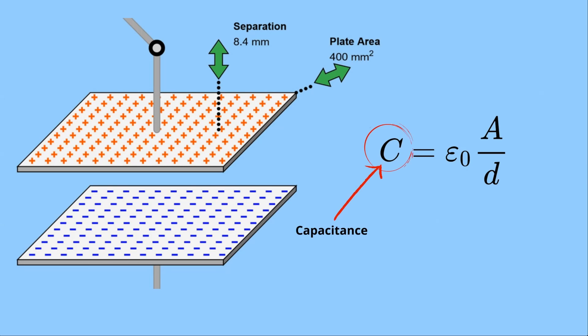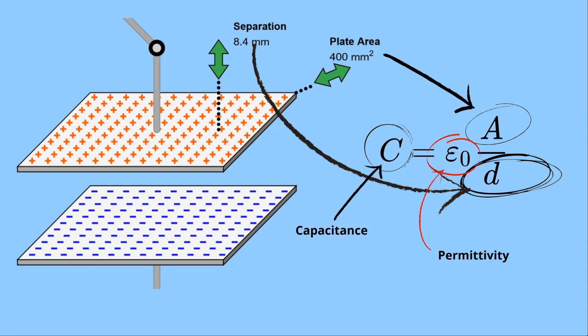C stands for capacitance. A is for the overlapping plate area. D is the separation distance between plates. Epsilon is the permittivity of the insulator that is between the parallel plates. In this case, there's nothing between the plates, so I'm using epsilon naught, which represents the permittivity of free space.